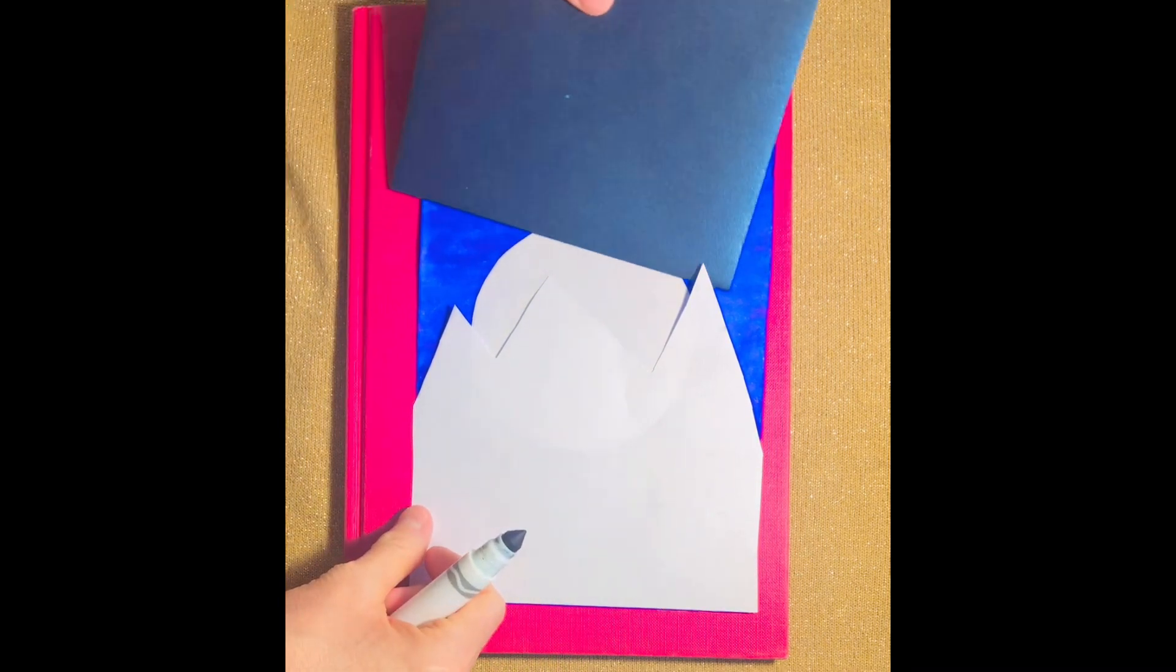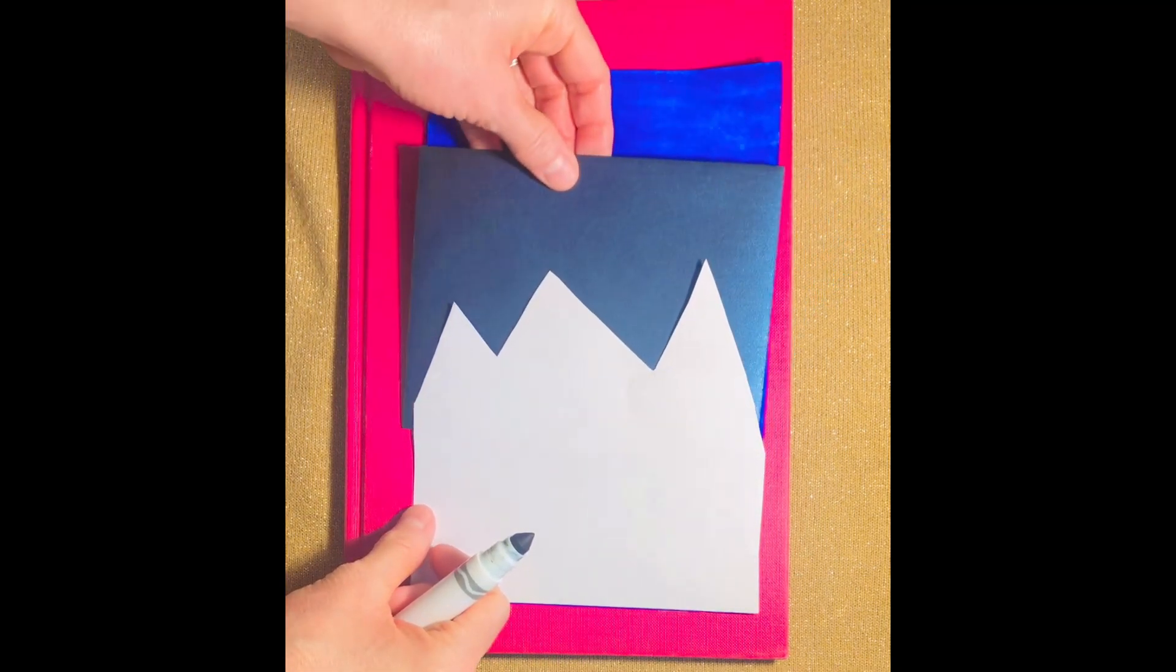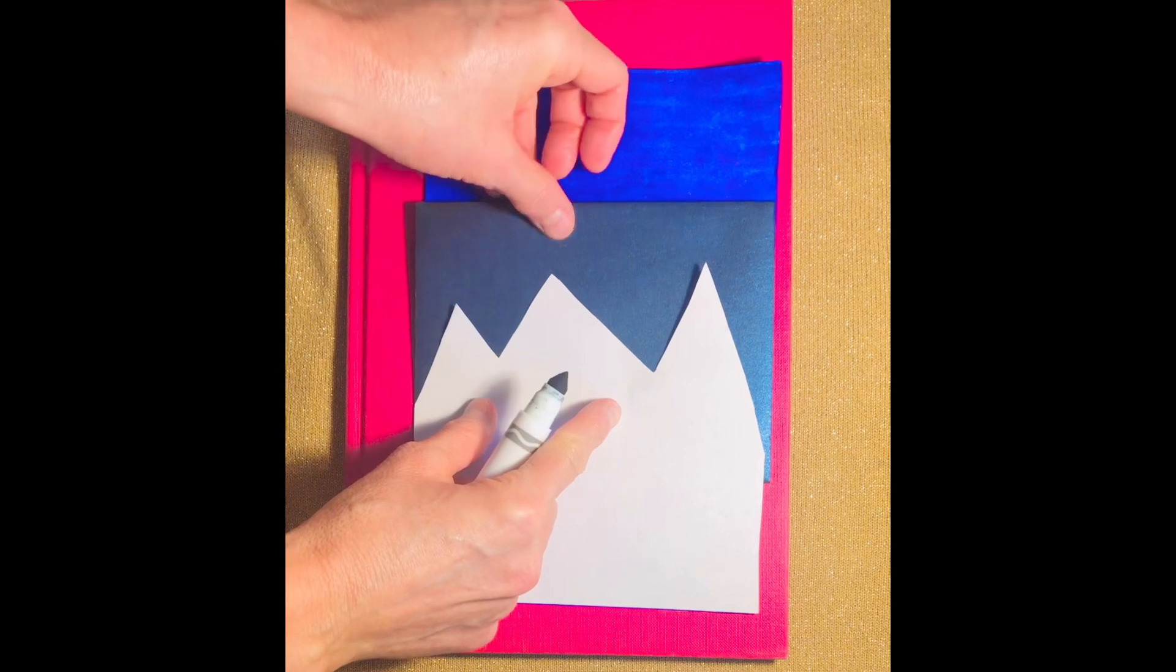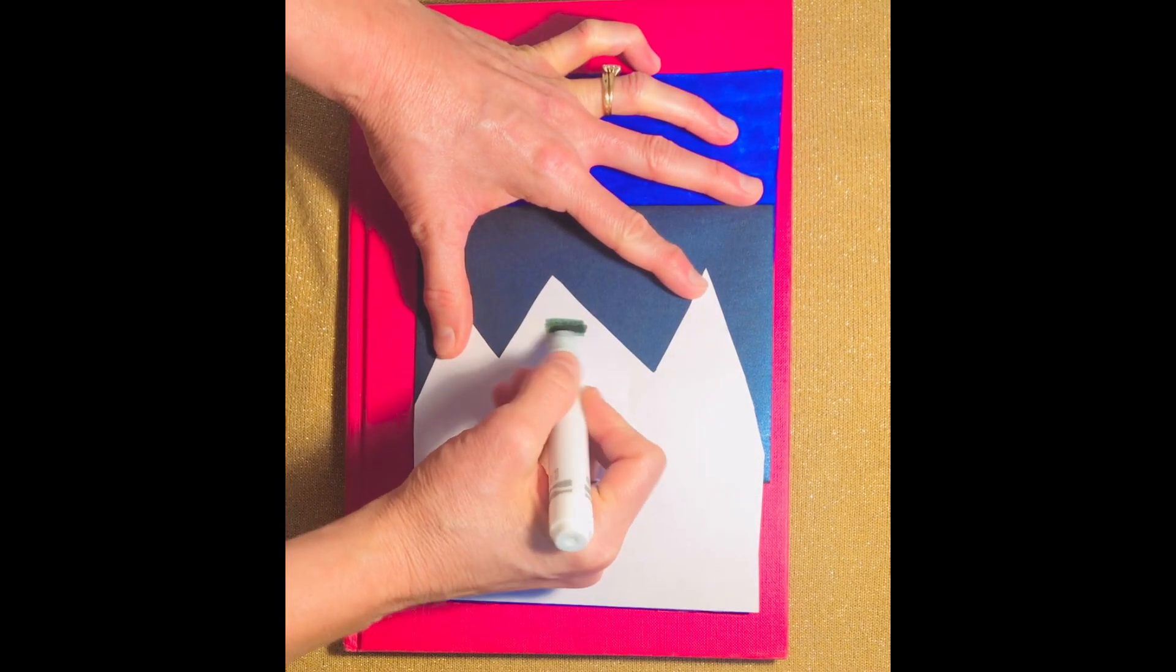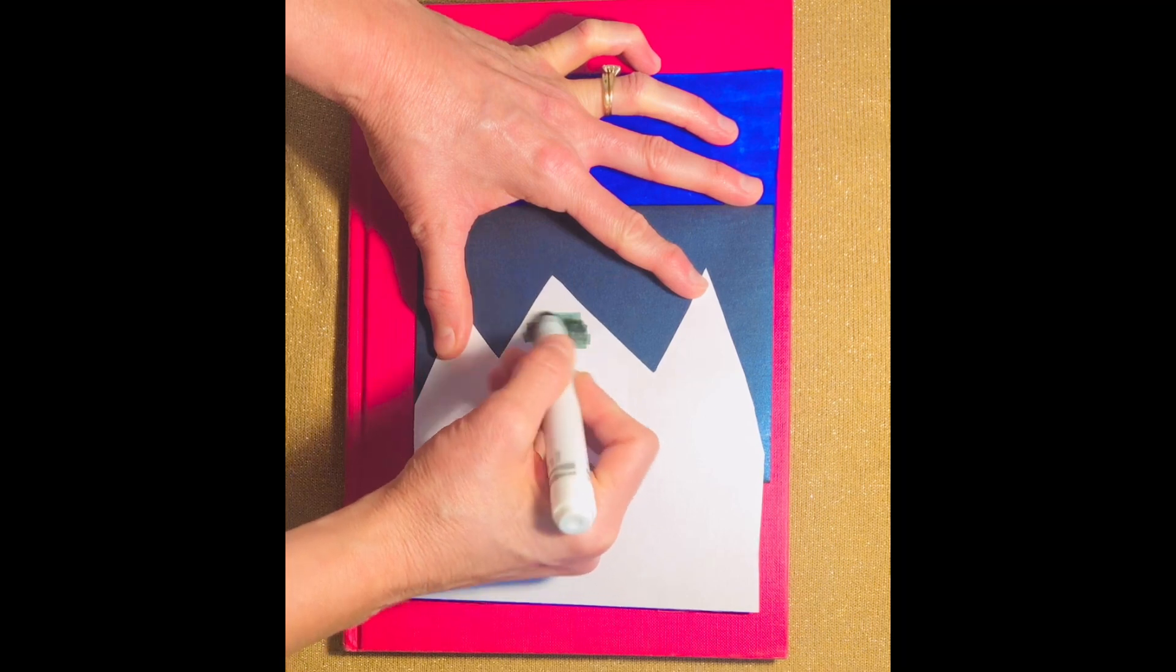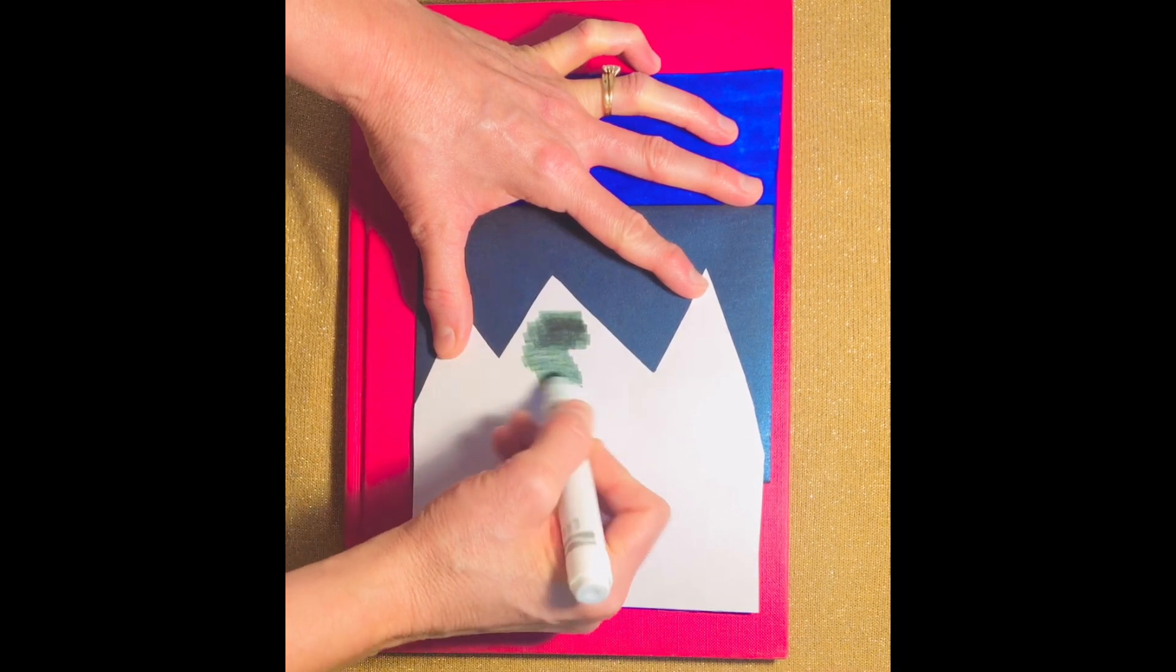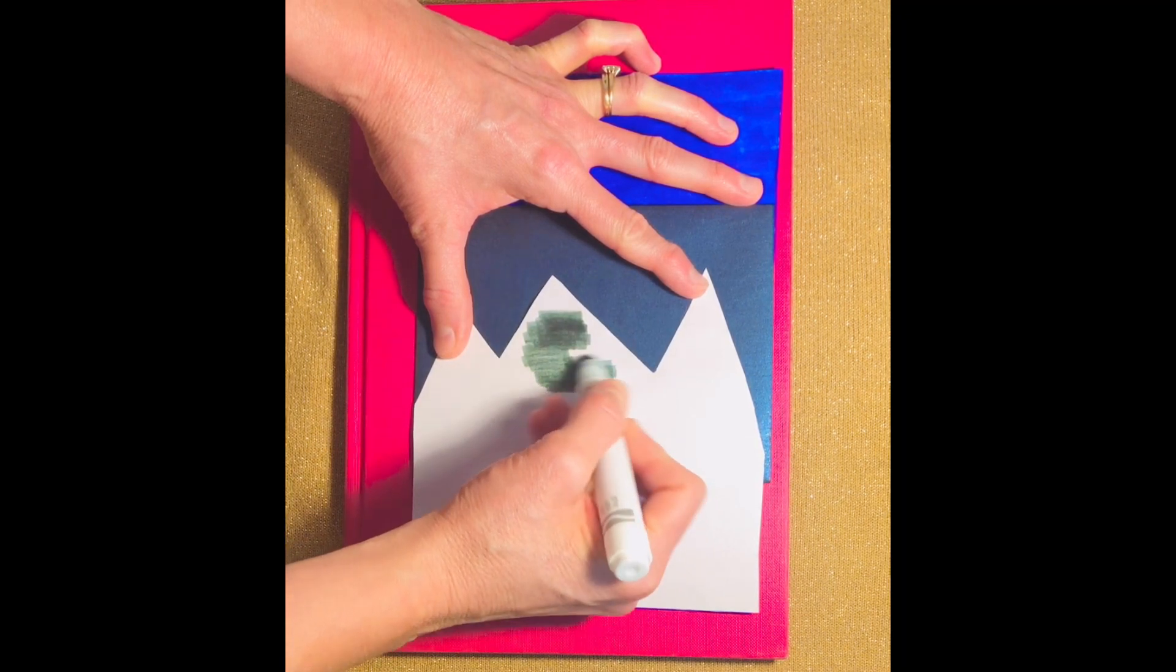I forgot to color my mountains before I placed them on my paper. So what I'm doing is I'm just placing a thicker piece of paper behind my mountains and I'm going to color them in this gray color.